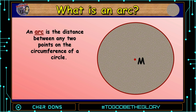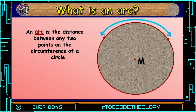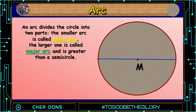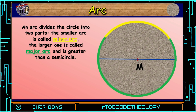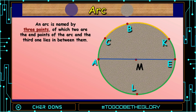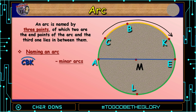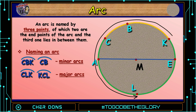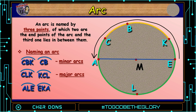Next, what is an arc? An arc is the distance between any two points on the circumference of a circle. We have here arc CK. An arc is a part of the circle connecting two points. An arc divides the circle into two parts: the smaller arc is called the minor arc, and the larger one is called the major arc, which is greater than a semicircle. A semicircle is an arc of a circle whose endpoints are the endpoints of a diameter. An arc is named by three points: two are the endpoints of the arc and the third lies in between them. So, arc CBK and arc CB are minor arcs. For major arcs, we have arc CLK and arc KCL. While arc ALE and arc EKA are both semicircles.